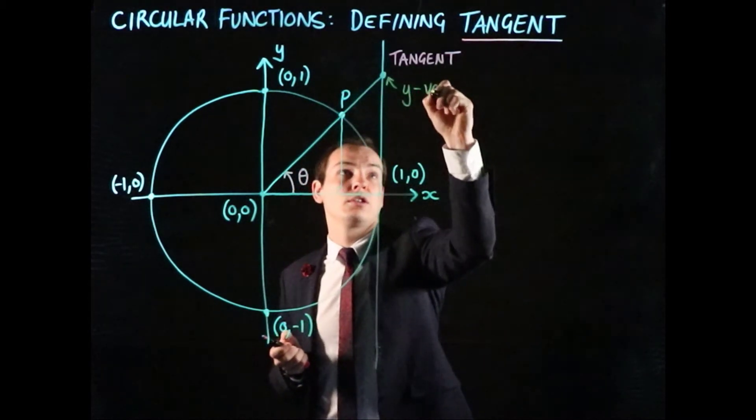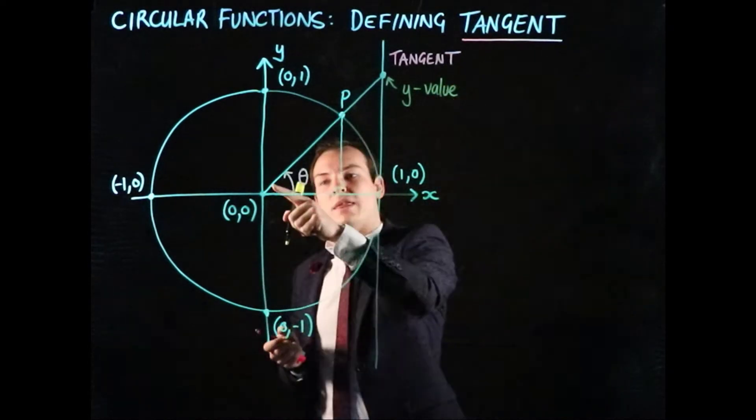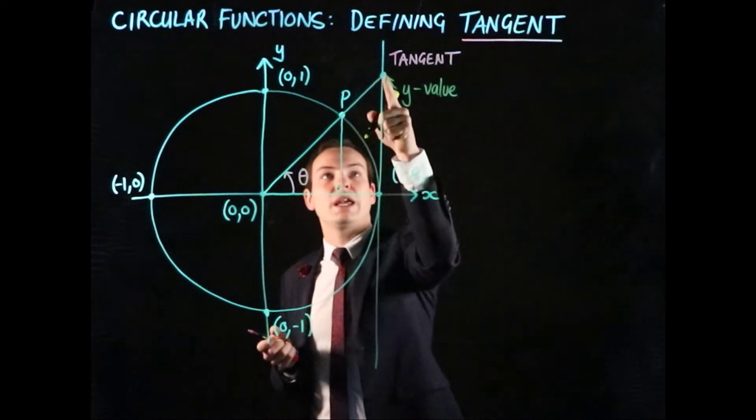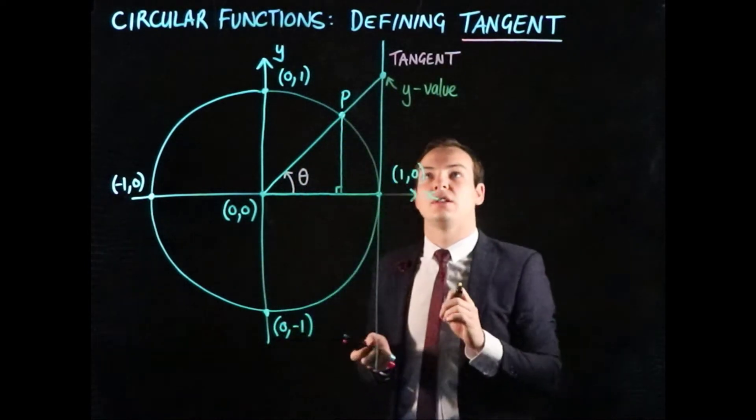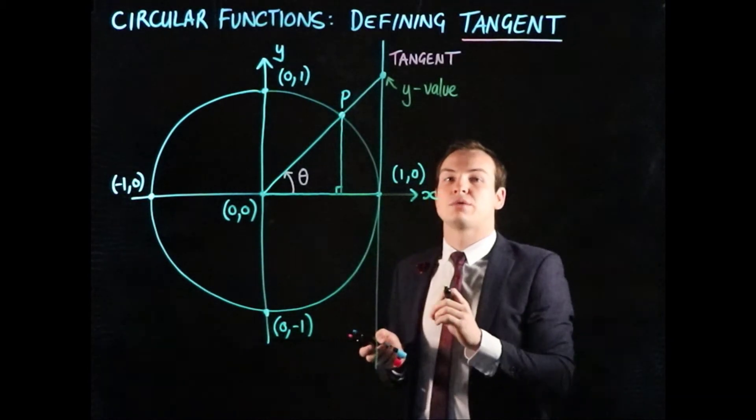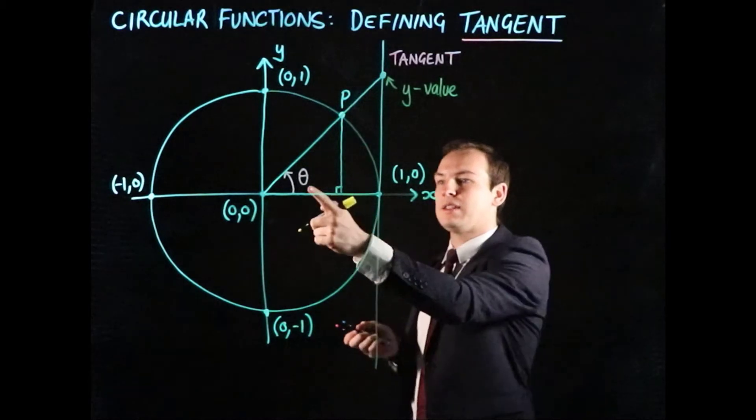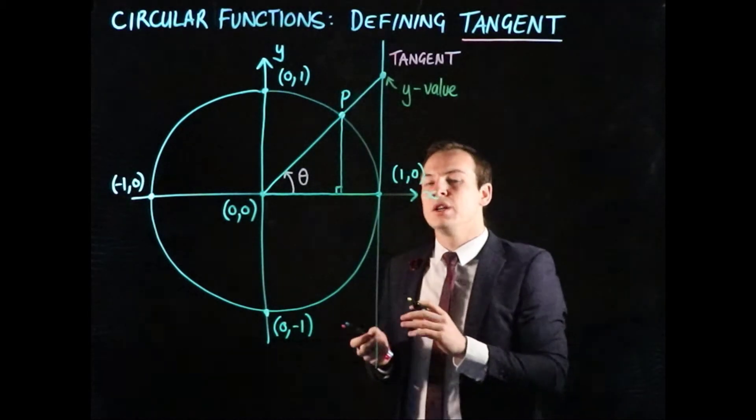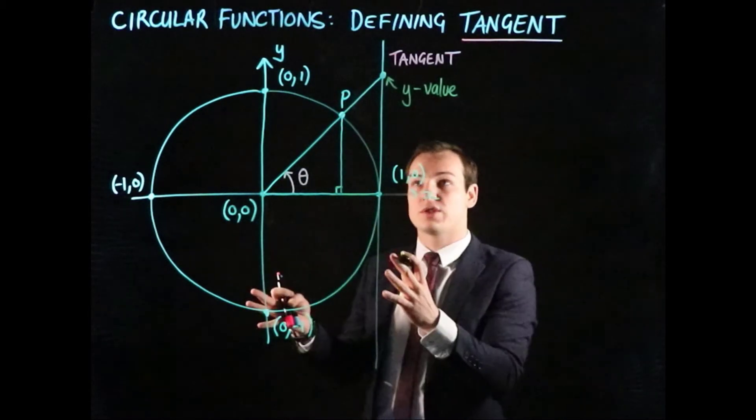In particular, we're interested in the y-value of this coordinate—the y-value where this line passing through P intersects the tangent line. That y-value represents tan(θ). That's how we define it using the unit circle.